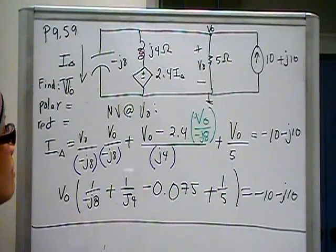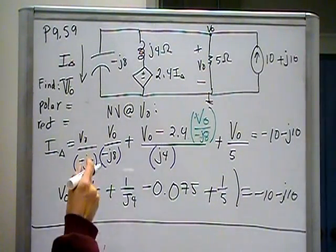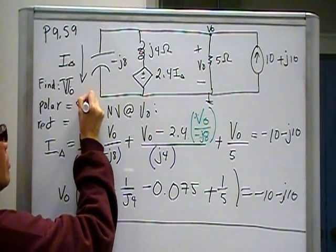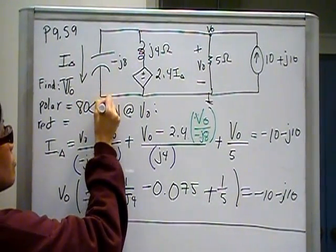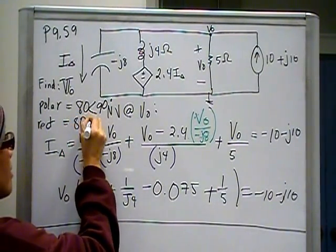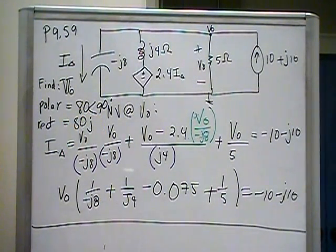I claim that you should come up with a polar answer of 80 angle 90. And the rectangular form is 80J. And that is what Spice tells me my answer should be.